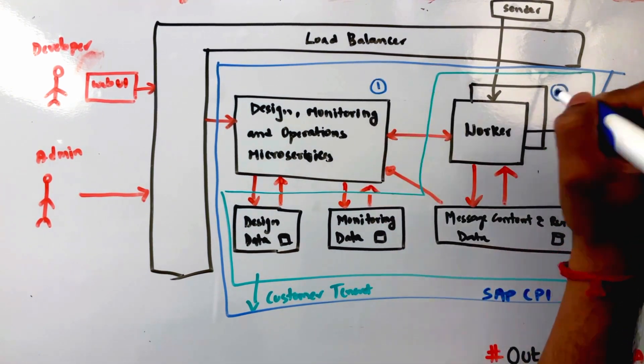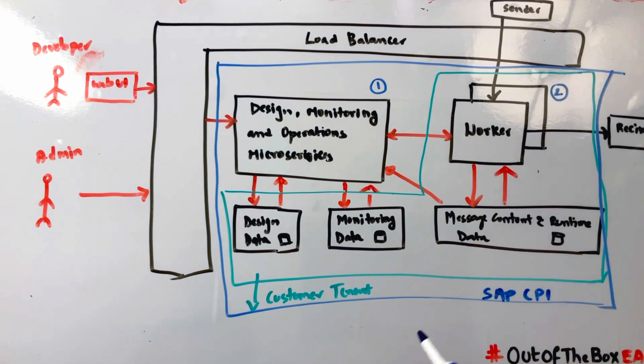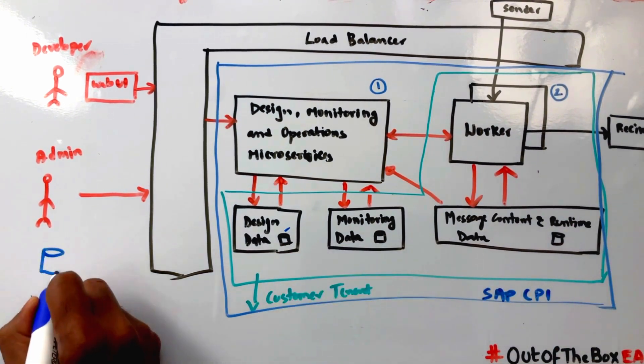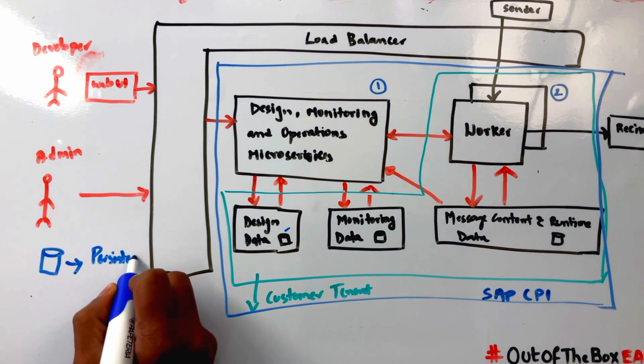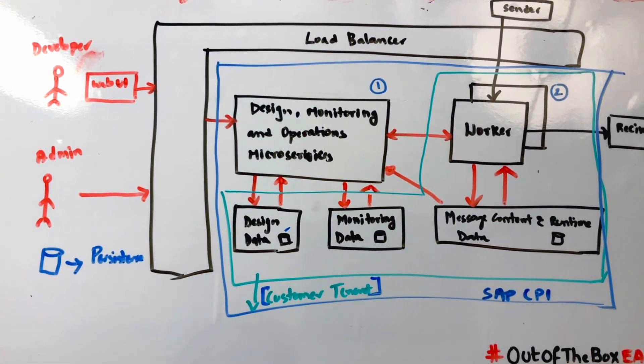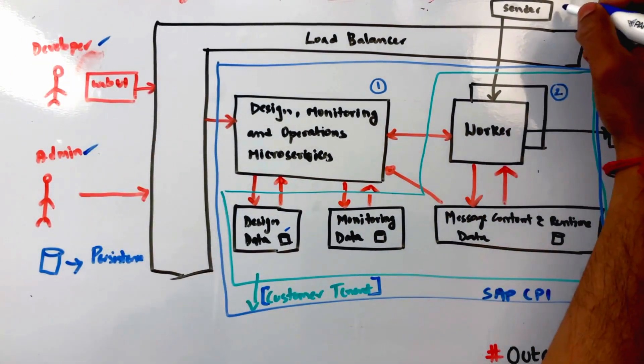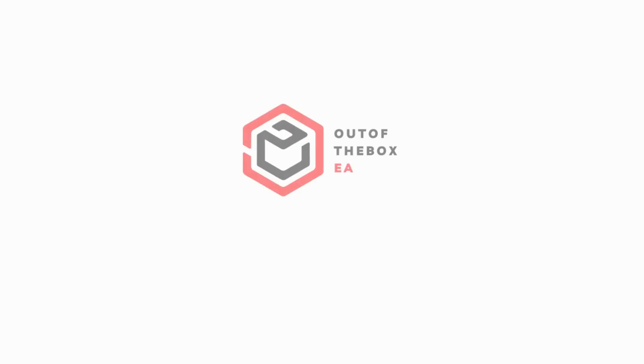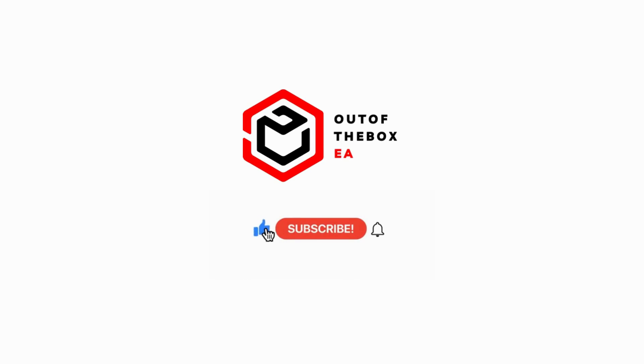SAP CPI comprises fundamental components that work together seamlessly to create reliable and effective integrations between sender and receiver systems. Additionally, SAP CPI stores certain integration flow data locally for specific purposes. If you like the video, consider giving a like or subscribe to my channel. Thank you for watching.